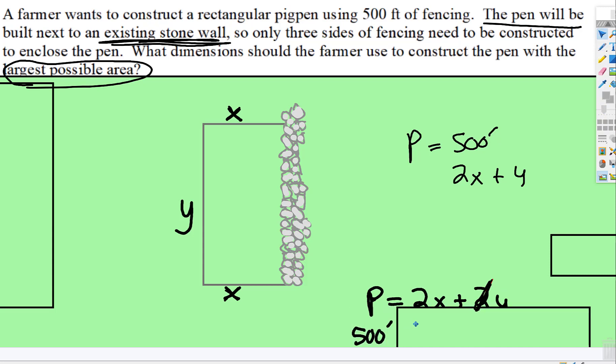And instead of P, we can put 500 feet. Well, we're going to need to get the y by itself. So y is going to equal 500 subtract 2x, because right here if we subtract 2x.